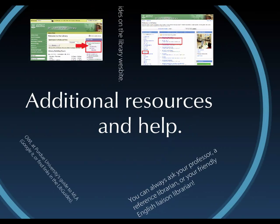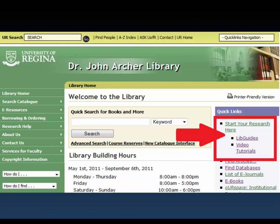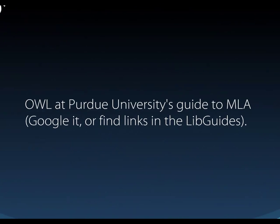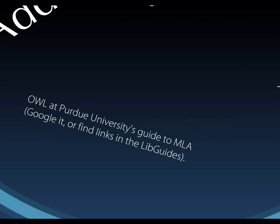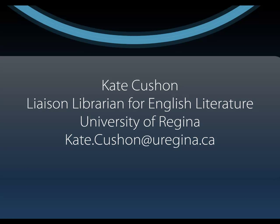Additional resources include the LibGuides on the library website, which can be a good resource for MLA style. Click on 'Start Your Research Here' on the right side of the library home page, then click on LibGuides — there is one called 'How Do I Cite' which includes MLA style information, as well as the English LibGuides. Another excellent online source is the Online Writing Lab, or OWL, at Purdue University, which has a guide to MLA that you can Google or find linked in the English LibGuides. You can also ask your professor, a reference librarian, or the English Liaison Librarian — that's me. Contact information is shown here. If you have any questions, please don't hesitate to get in touch. Good luck with your research!